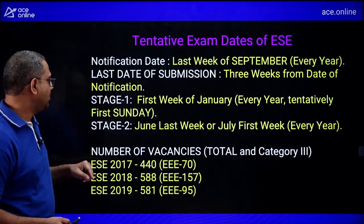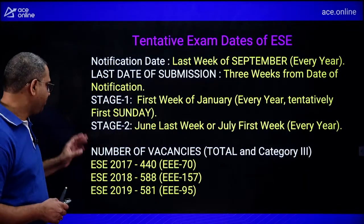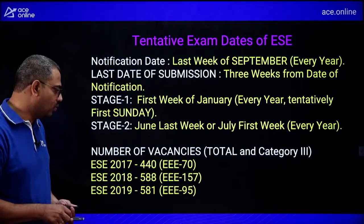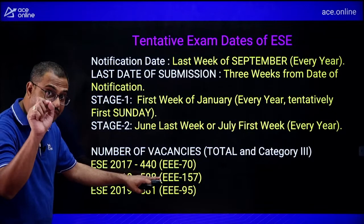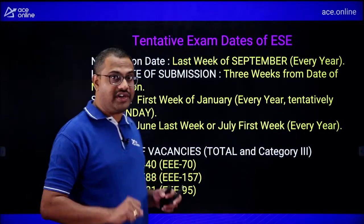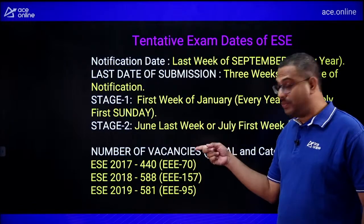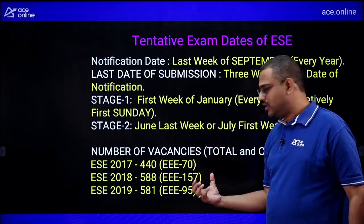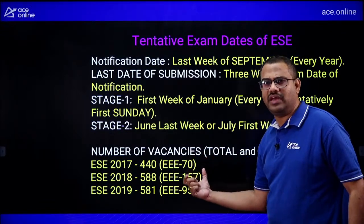ESE tentative schedule: notification last week of September, last date of submission approximately 3 weeks after notification, Stage 1 first week of January (though last year it shifted to February), Stage 2 last week of June or first week of July. For ESE post data, for example: 2017 had ~440 total posts, 2018 had 588 posts, with EE branch getting 70 in 2017, 157 in 2018, and 95 in 2019.